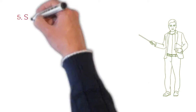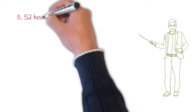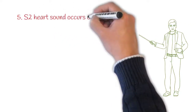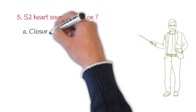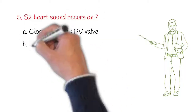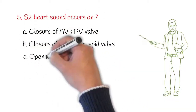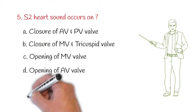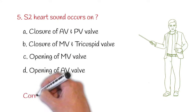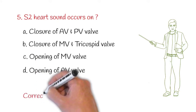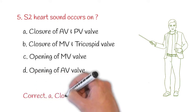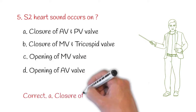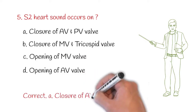Next question: the S2 heart sound occurs on — option A: closure of the AV and pulmonary valves, option B: closure of the atrioventricular valve, option C: opening of the mitral valve, option D: opening of the AV valve. Correct answer: A — closure of the AV and pulmonary valves.